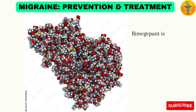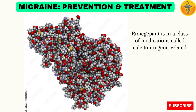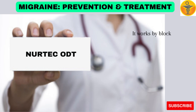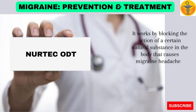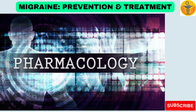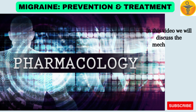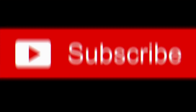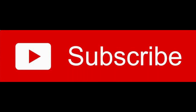Rimegepant is in a class of medications called calcitonin gene-related peptide receptor antagonists. It works by blocking the action of a certain natural substance in the body that causes migraine headaches. Brand name: NURTEC ODT. In this video we will discuss the mechanism of action, treatment, dosage, side effects, and other pharmacology of Rimegepant NURTEC ODT. But before that, please subscribe to my channel Medicine God.